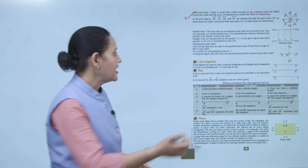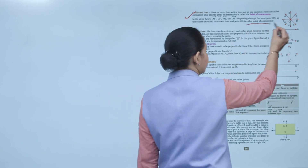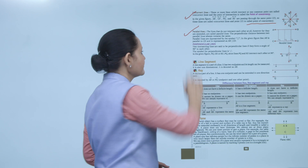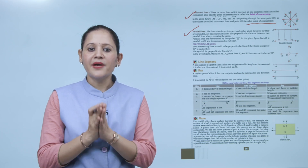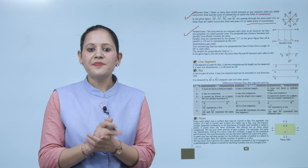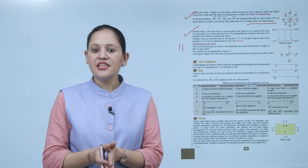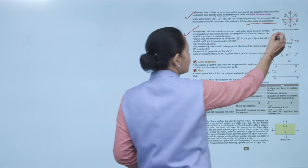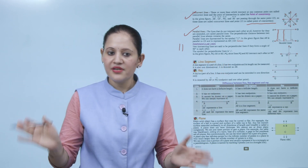Point O is the point of concurrency and these lines are known as concurrent lines. Next is parallel lines. Lines that do not intersect each other, however far they extend, are called parallel lines. The perpendicular distance between two parallel lines always remains the same. Parallel lines are represented by the symbol ∥. In the figure, line AB is parallel to line CD, written as AB ∥ CD.